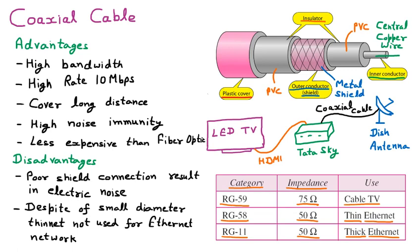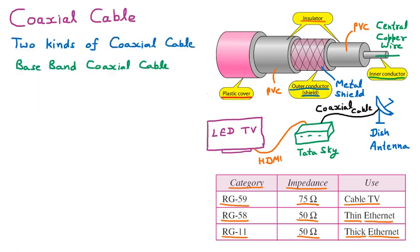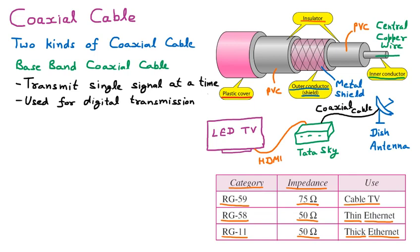There are two types of coaxial cable: baseband and broadband. Baseband transmits a single signal at a time and is used for digital transmission — passing binary data (zeros and ones). It must be amplified every thousand feet and is used for LAN (local area network).